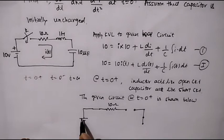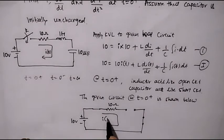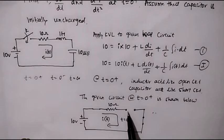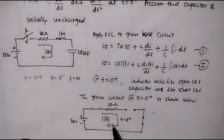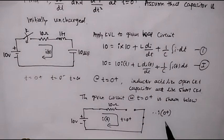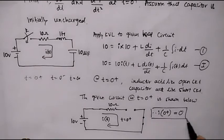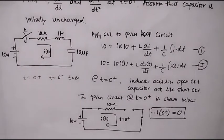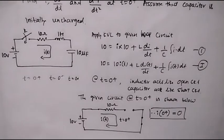I will connect the 10 volt source as it is and assume that current I of t is flowing. Now, after closing the switch, the value of t is equal to 0 plus, so I can write it as I of 0 plus. The circuit is open here due to the inductor, which means the current in the circuit is 0. Therefore, I of 0 plus is equal to 0. We will call this equation number 2.